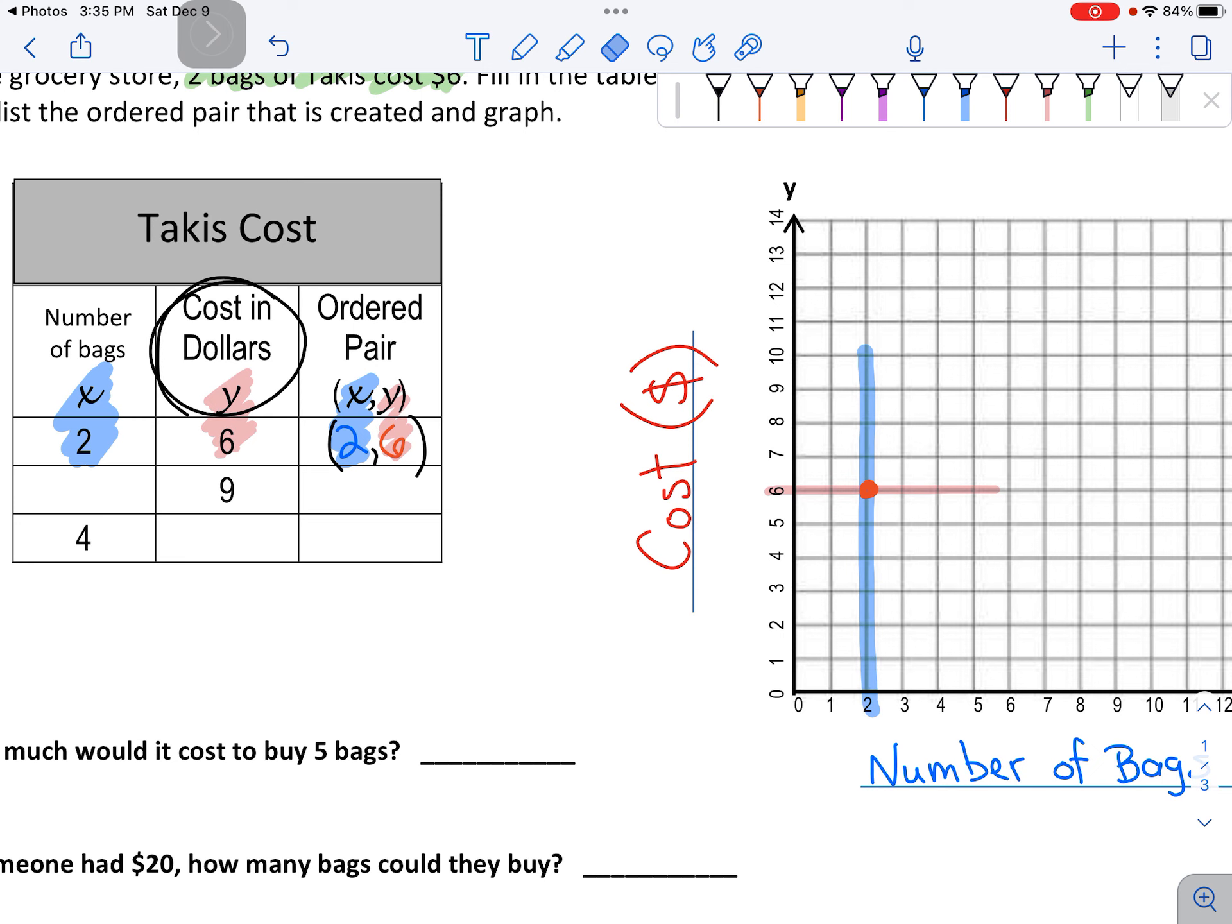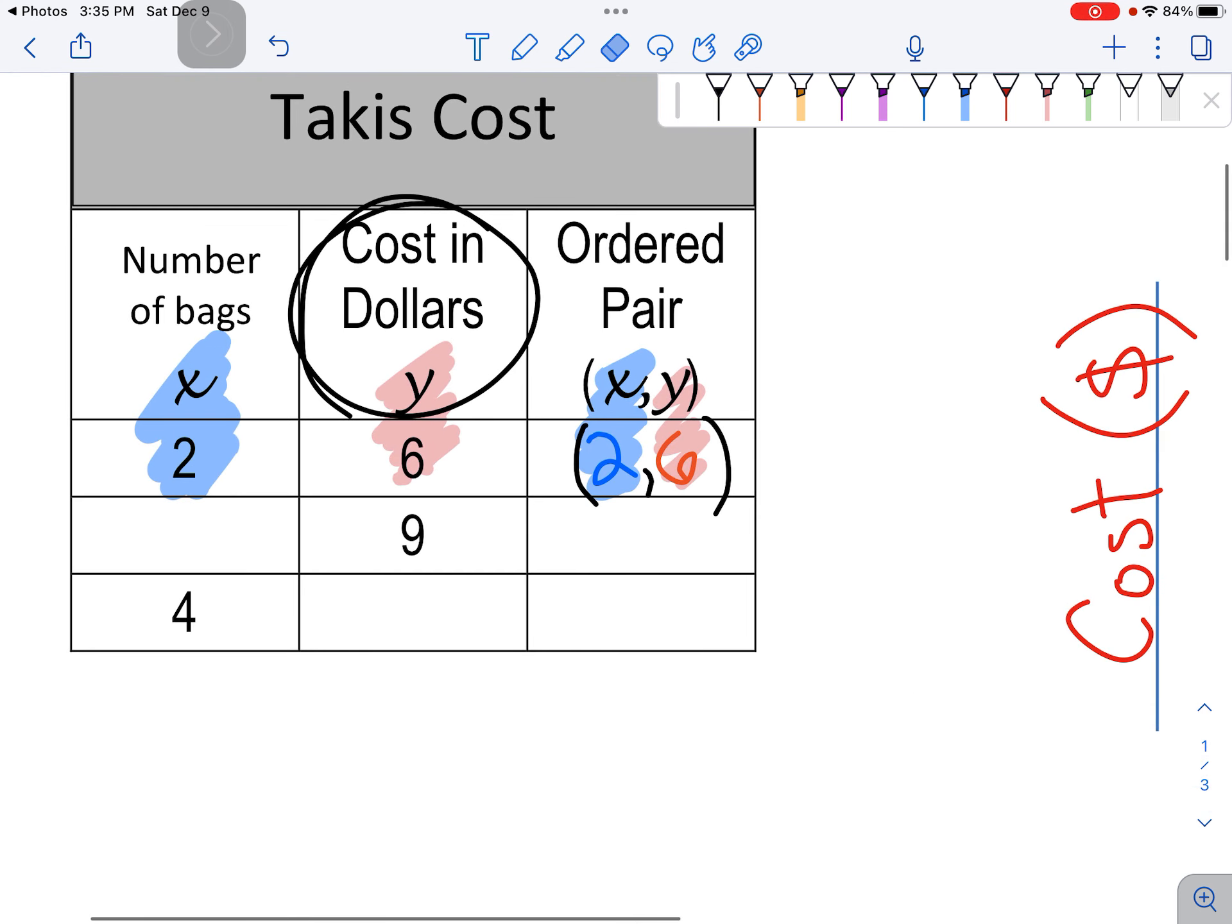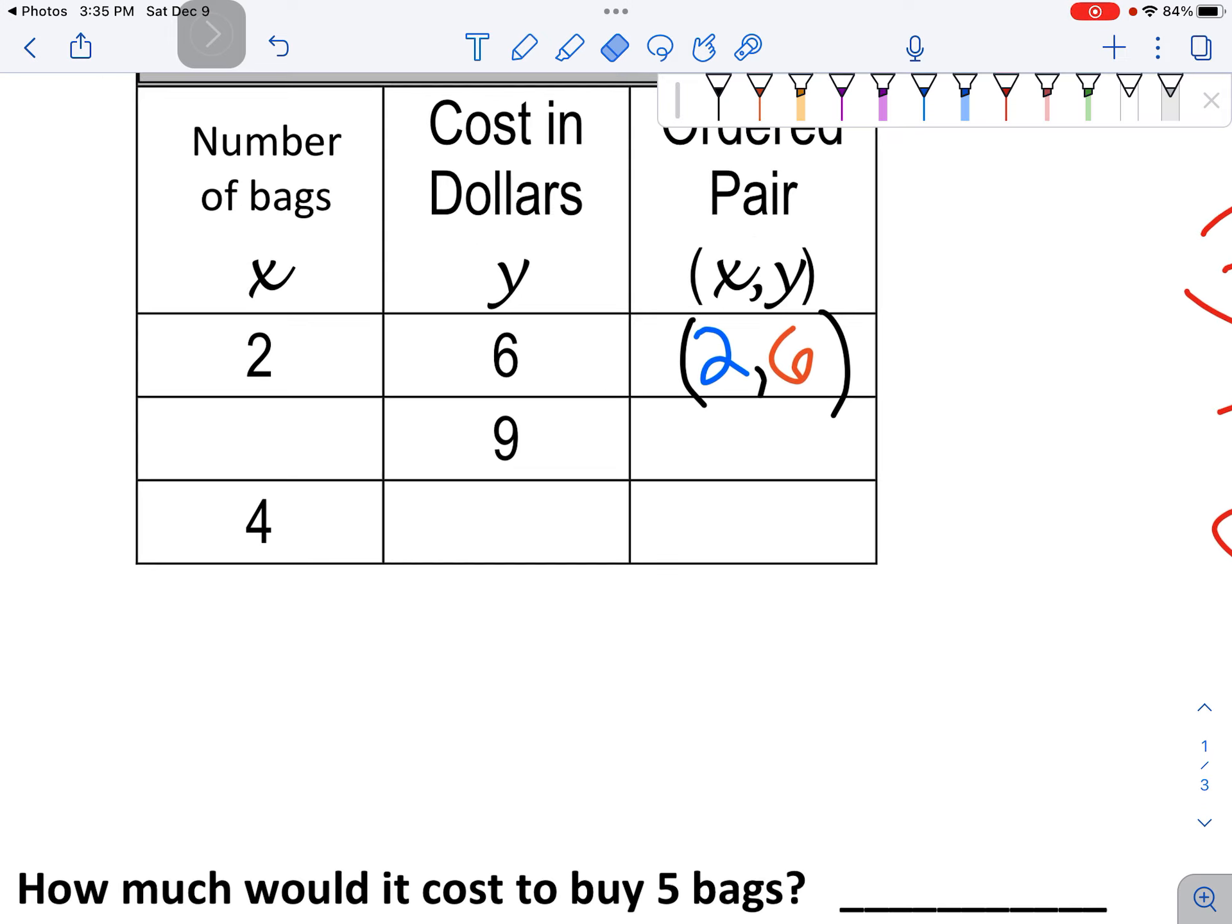Let's make another dot on our graph. Now it says nine dollars. So I have to figure out how many bags it's going to take to cost nine dollars.